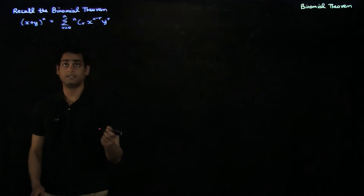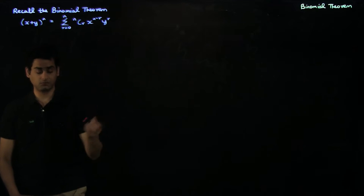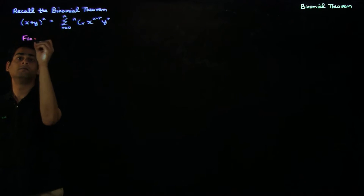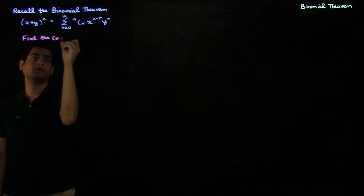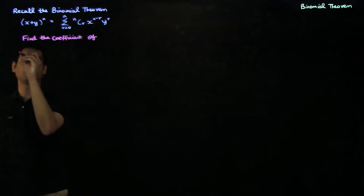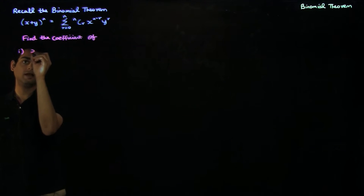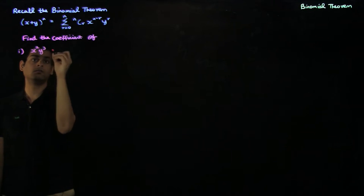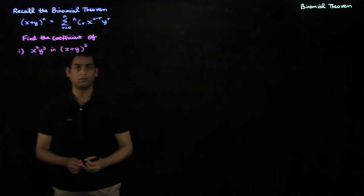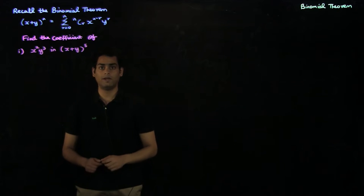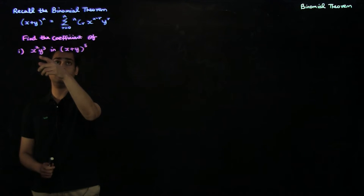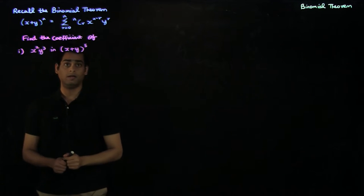A typical question you might expect in an exam based on the binomial theorem is as follows. We want to find the coefficient of x²y³ in (x + y)^5. A way to tackle this question is to match the term you're required to find with the general term of the binomial expansion.